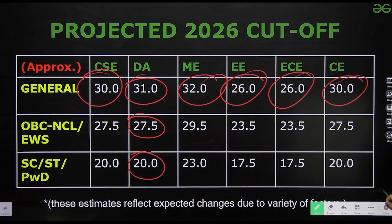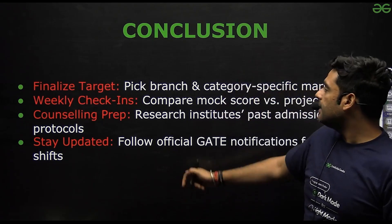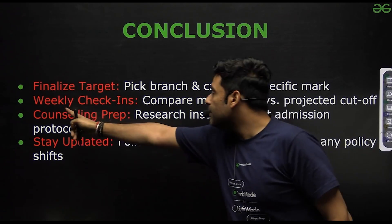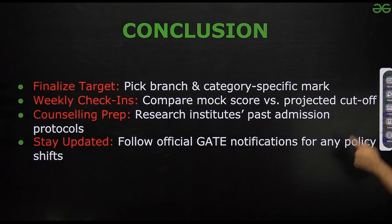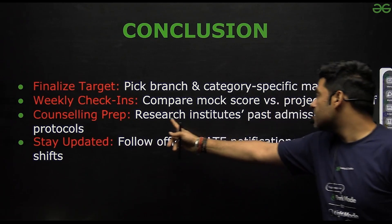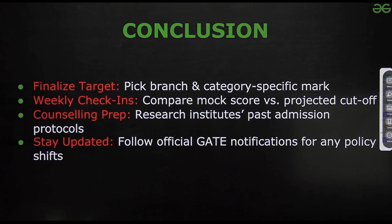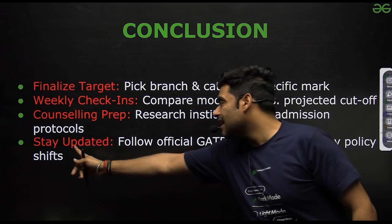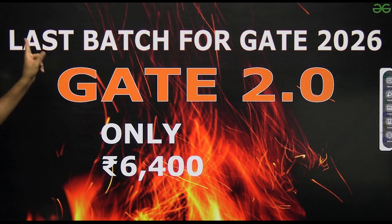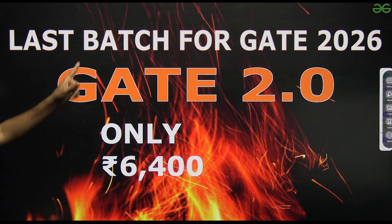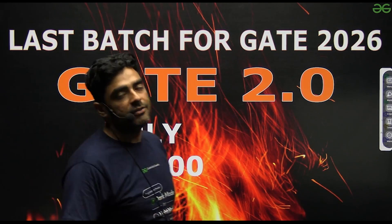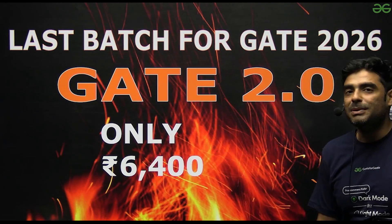To conclude: first, finalize your target — pick the branch and category-specific mark. Weekly check-ins are important to compare mock scores against projected cutoffs. Counselling preparation is also key, as knowing research institute admission protocols will be very helpful. Stay updated and follow official GATE notifications for any policy shifts. The last batch for GATE 2026 for DA as well as CS is starting soon — you can enroll if you want. Thank you so much.